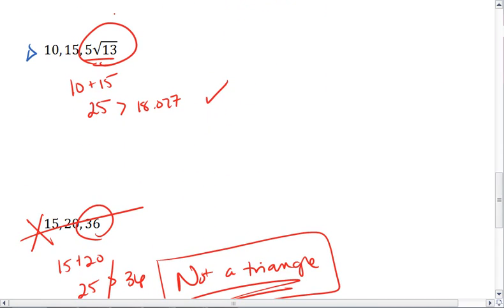Okay, for the next one, our largest value, so our c value is 5 radical 13. We get 5 radical 13 squared.